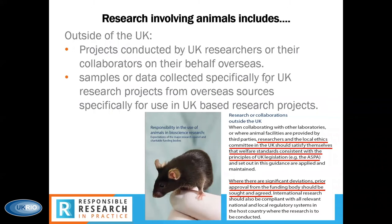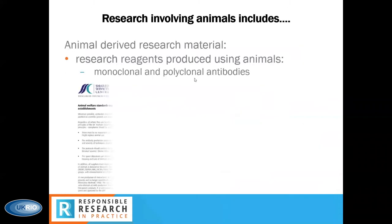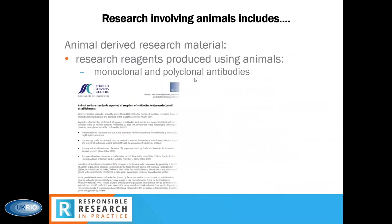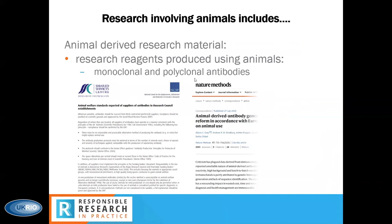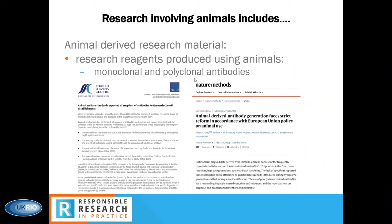UK researchers may also be using animal-derived materials from a range of different sources. One common example is the use of monoclonal and polyclonal commercial supplies or donated research reagents — antibodies. There are animal welfare concerns relating to the methods of producing animal-derived antibodies significant enough that the National Centre for the Three Rs and UKRI issued a joint statement on standards expected of suppliers of antibodies to research council-funded establishments. More recently, debates have arisen surrounding the reliability and reproducibility of animal-derived antibodies.